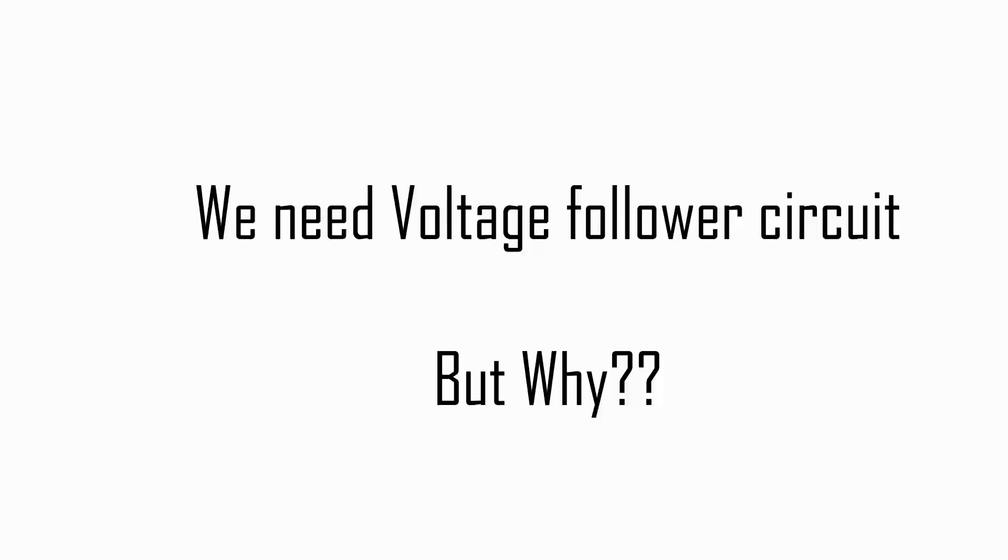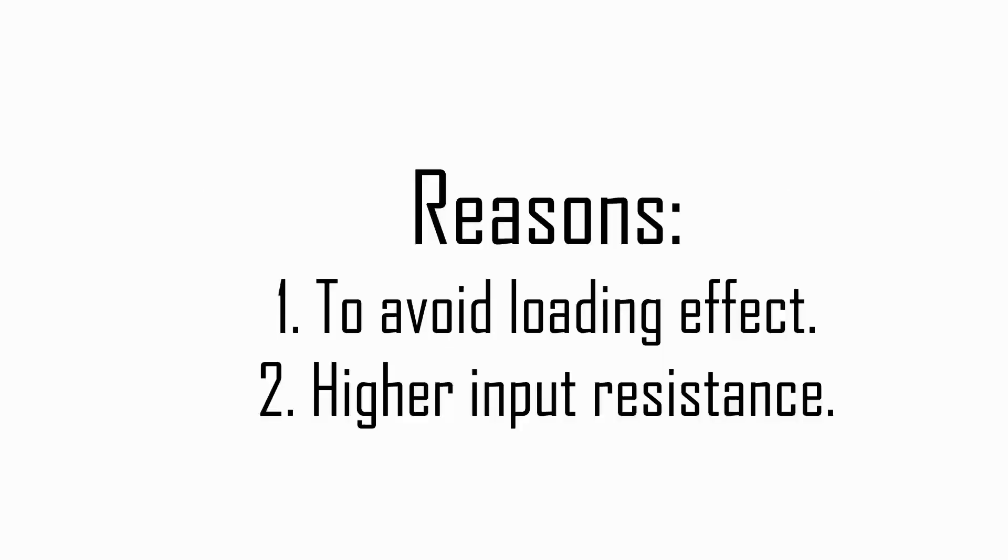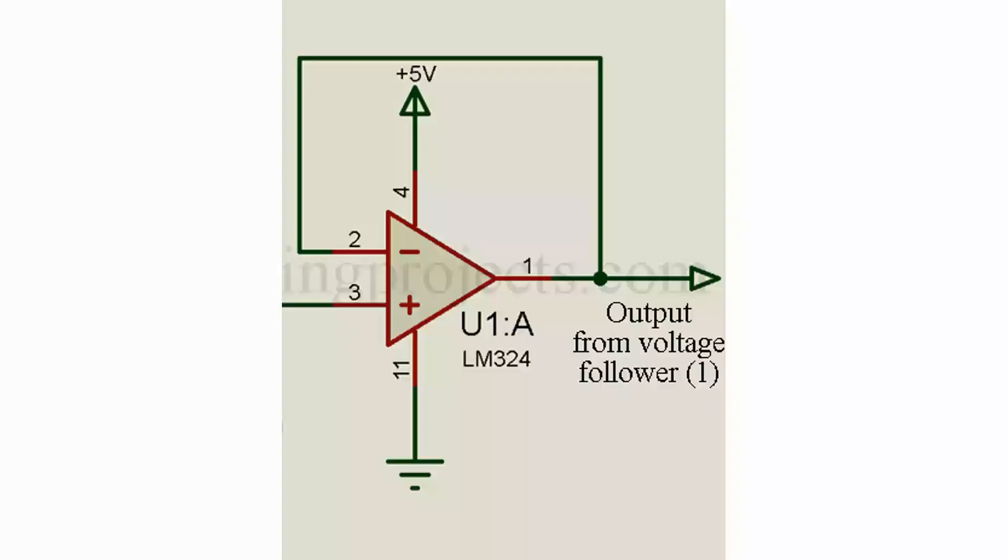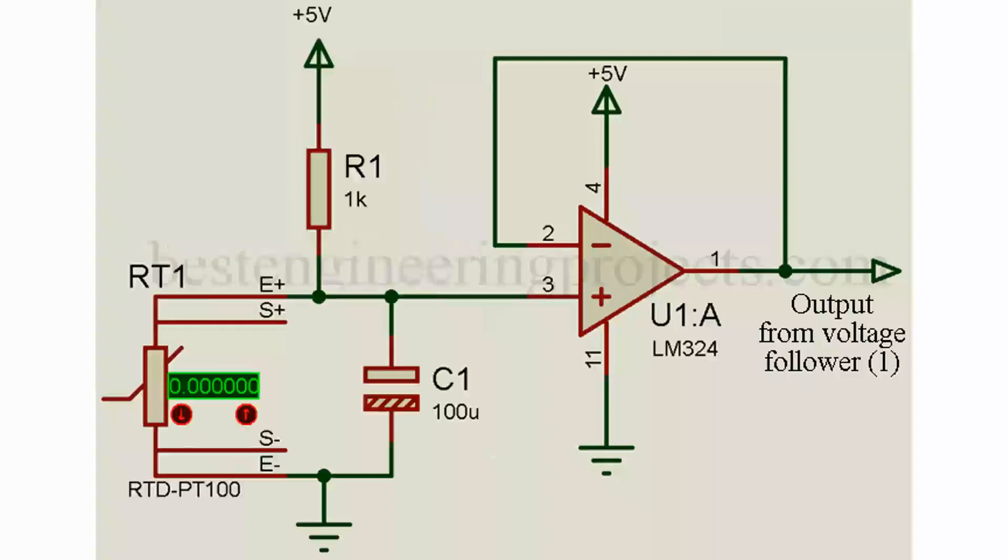We cannot connect this Vout directly to Arduino Nano. We need various amplifying stages. At first, I am going to use voltage follower circuit. There are two main reasons: to avoid loading effect and second is higher input resistance. Voltage follower circuit is basically a unity gain non-inverting amplifier. This amplifier circuit is called voltage follower because the output voltage is equal and in phase with the input. The output of PT100 Vout is connected to non-inverting terminal, where inverting terminal is connected directly to output for unity gain.